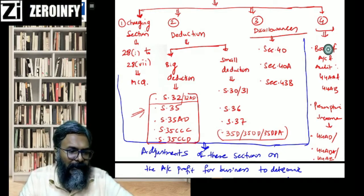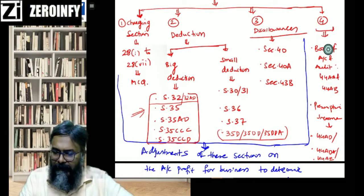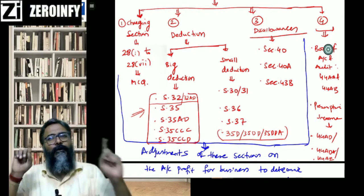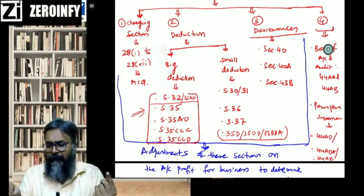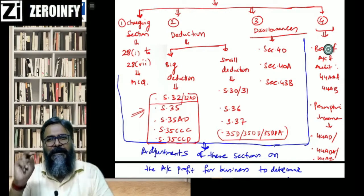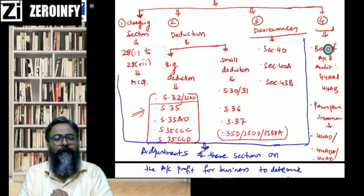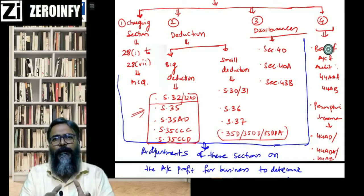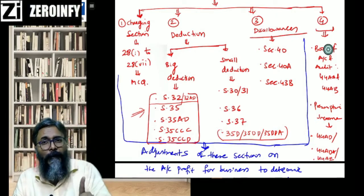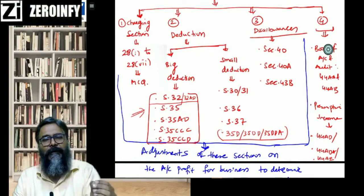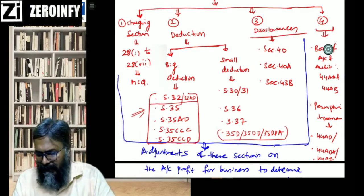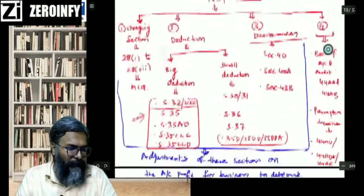So small deductions include 30, 31, 36, 37, and 35D, 35DD, 35DDA. Some students ask whether they need to remember section numbers. I told you earlier — section numbers need not be remembered. However, through visual memory, 60 to 70 percent of a section you will easily recall. If you're not sure about the section number, please don't quote it — simply write 'as per the Income Tax Act 1961.'